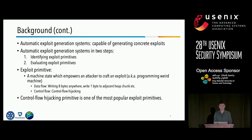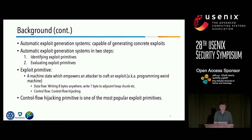The workflow behind AEG systems usually consists of two steps. In the first step, they identify an exploit primitive — a machine state which somehow empowers an attacker to craft the exploit. The second step is to evaluate whether this exploit primitive could really be used to generate concrete exploits. Depending on the type of available exploit primitive, we choose different exploit techniques to finish the exploit.